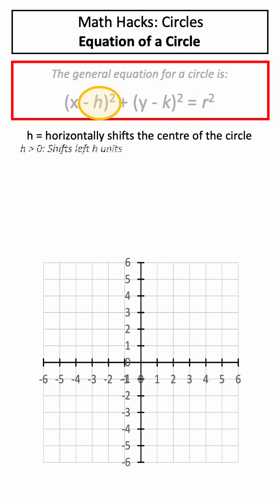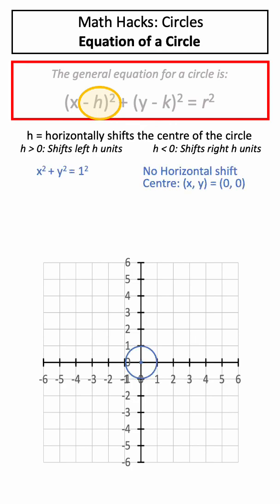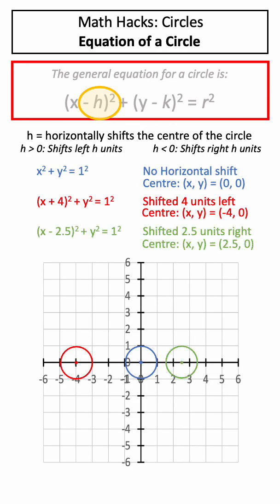h horizontally shifts the circle. If h is positive, the circle is moved left h units, and if h is negative, the circle is moved to the right h units. Normally the circle is centered at (0, 0), but if we adjust the value of h, we can move the circle to the left or to the right.